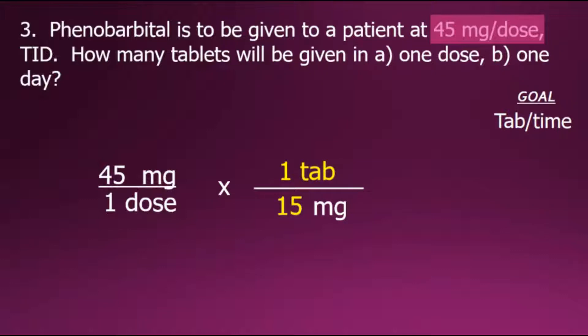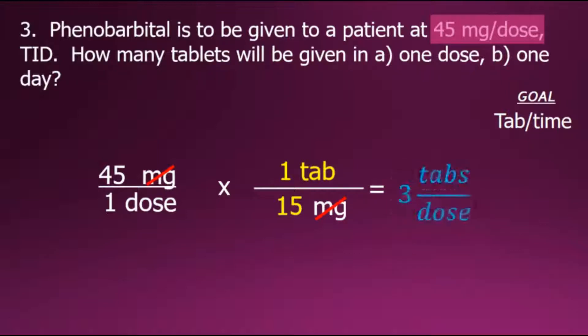We can now cancel out the common factor of milligrams, perform the multiplication and simplification with division of the result, leaving us with an answer of three tablets per dose to answer the first question.